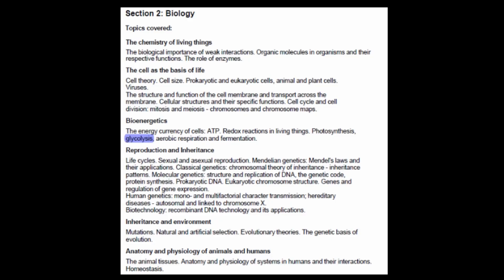Hi everyone, this is Andy from Med School EU. In today's lecture we're going to continue talking about bioenergetics. Now that we know how to produce our organic compound through photosynthesis in organisms considered to be photoautotrophs, we're going to see how that organic compound is broken down to produce energy. This process is called cellular respiration, and the first step of cellular respiration is glycolysis.